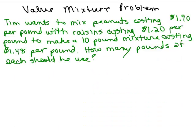All right, we're going to work through this value mixture problem. Tim wants to mix peanuts costing $1.90 per pound with raisins costing $1.20 per pound to make a 10-pound mixture costing $1.48 per pound. How many of each should he use?